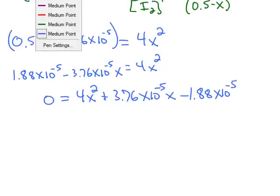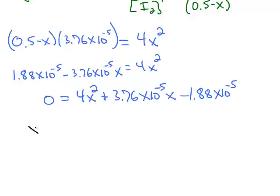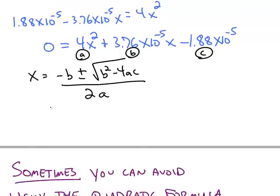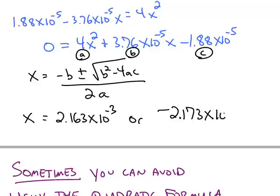So now I have this in the correct format. I can use the quadratic formula where x is equal to negative b plus or minus the square root of b squared minus 4ac all over 2a, where my a, b, and c are those numbers. So if I make this substitution, I'm going to come up with two possible answers for x. If you plug in all of these values, one possibility for x is 2.16 times 10 to the negative 3rd. The other one is negative 2.17 times 10 to the negative 3rd.